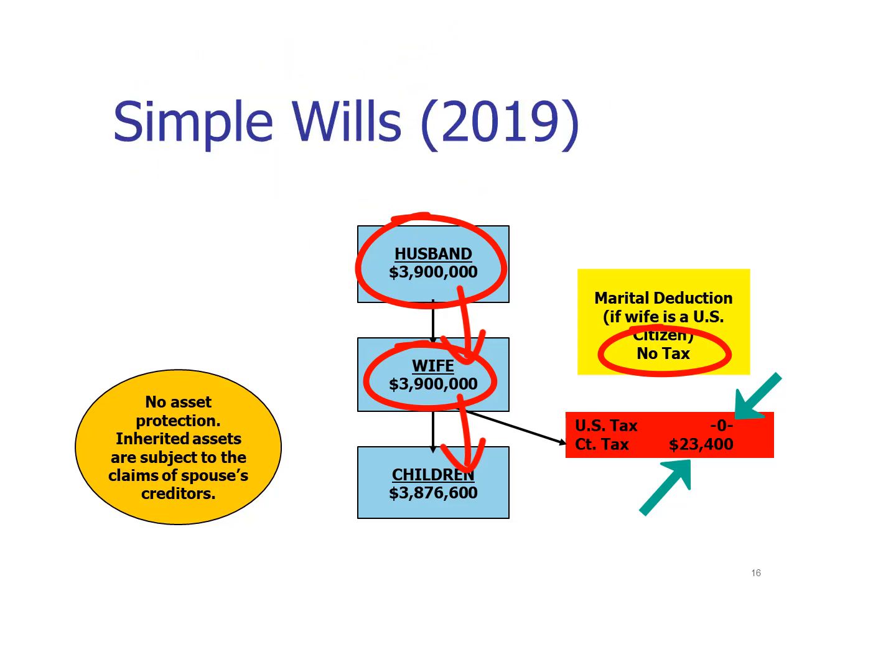Also keep in mind that if this couple is worried about nursing home costs, there is no protection built into this plan to protect any assets from claims, including nursing home costs. When the husband passes away and the wife receives everything, she ends up with $3.9 million. If she becomes frail and long-term care is necessary — whether in a nursing home or at home — having $3.9 million will disqualify her from getting any state assistance to pay for long-term care costs.